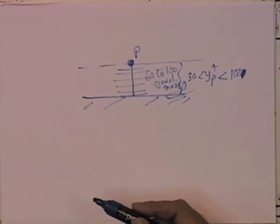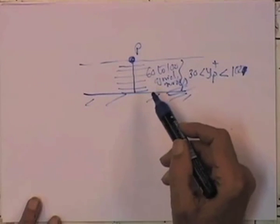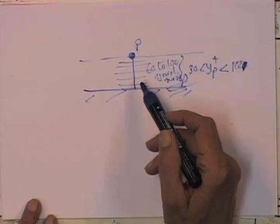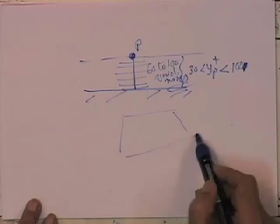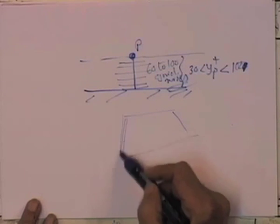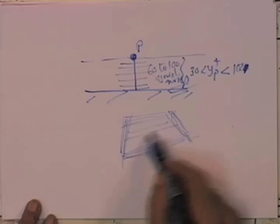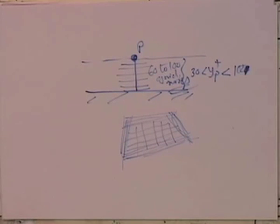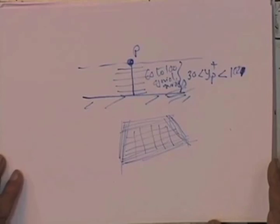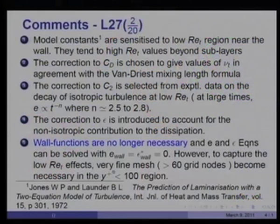This makes computation expensive. For a simple two-dimensional boundary layer it is not too much effort with today's desktop computers. But for an internal flow with two or three walls, you would need 60 nodes near each wall plus nodes in the core of the domain, making the total number of nodes very large. Low Reynolds number models have far greater validity than high Reynolds number models, but they are very expensive. Therefore, one uses them only when absolutely essential — an extremely fine mesh of greater than 60 grid nodes is required in the y-plus less than 100 region.